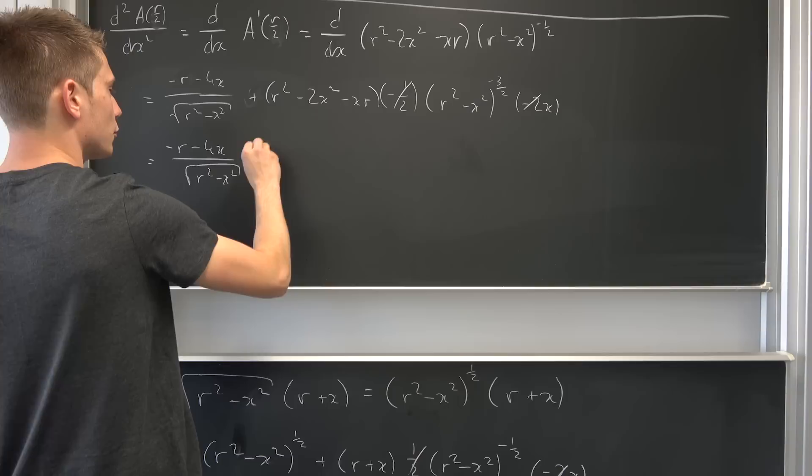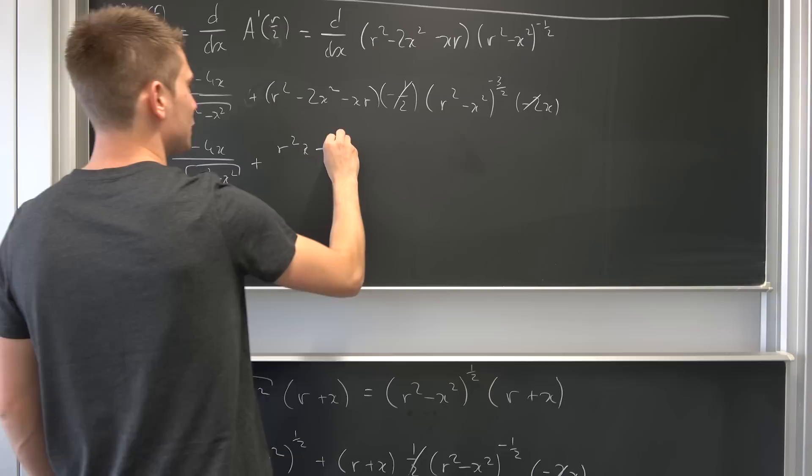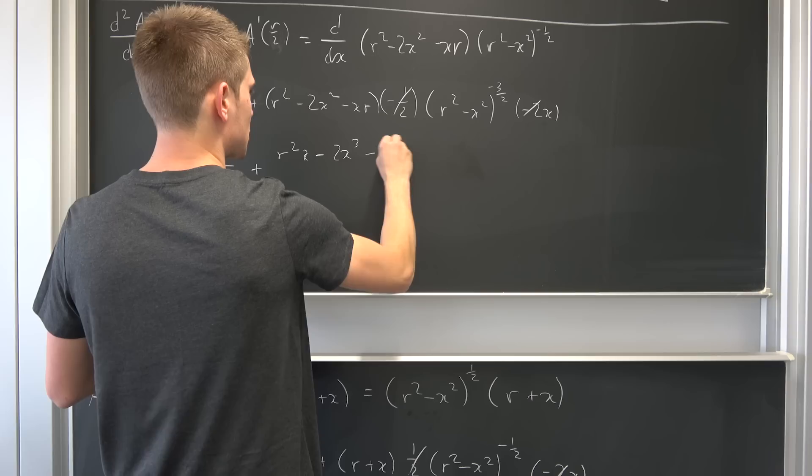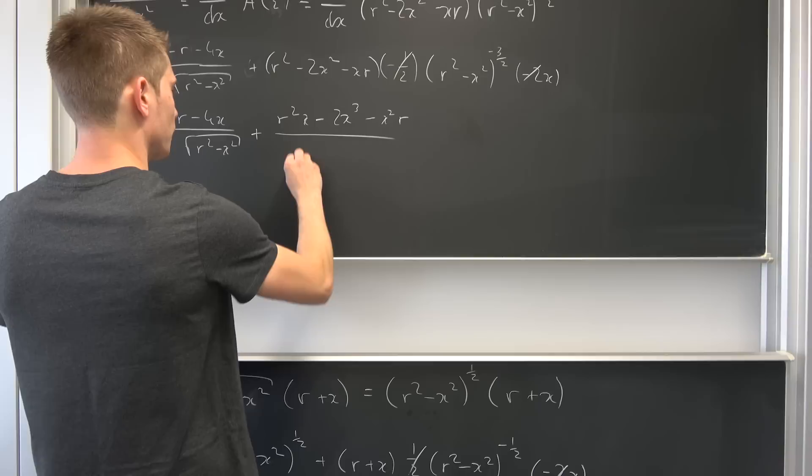So we have positive r squared times x negative 2 times x to the third power, x to the third power, and we also have negative x squared times r. So it is what it is and over this stuff right here. So r squared negative x squared to the negative 3 halves.